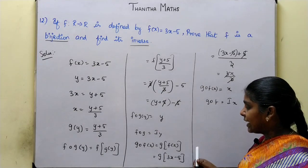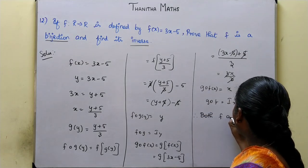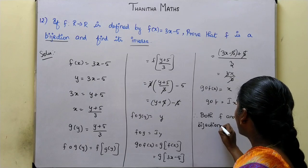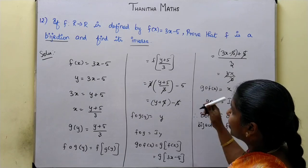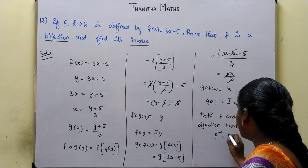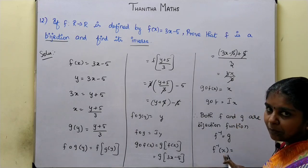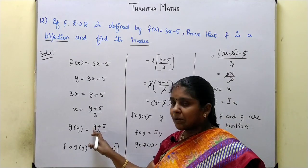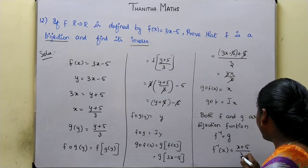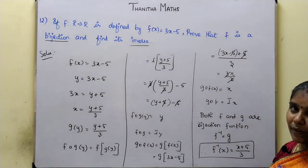Therefore we can say that f and g are both bijection functions. This means bijection is proved, and g is the inverse of f, so f inverse equals g. Now f inverse of x: replace y with x in g of y equals y plus 5 by 3, giving f inverse of x equals x plus 5 by 3. So this is our required answer.